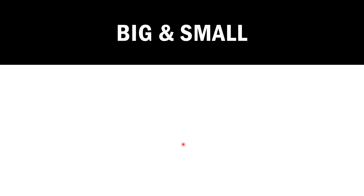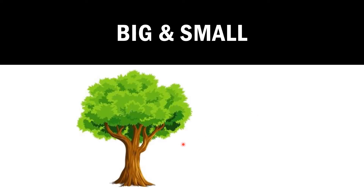Now, what is this? A tree. What is this, children? A tree. And this? A plant. It's a big tree, and this one is a small plant. Big tree. Small plant.